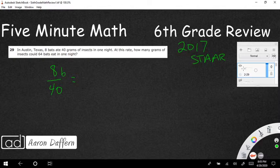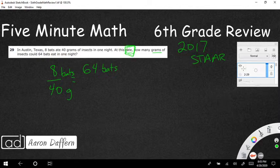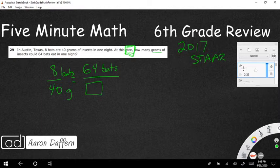At this rate, so here we have a rate which we can use a ratio for, how many grams of insects could 64 bats eat in one night. So here is going to be my rate or my ratio. I've got 64 bats. I know this rate means that it's going to be equal. I can treat it as if they were equivalent fractions. What I'm missing is a box for my unknown, and that's how many grams.